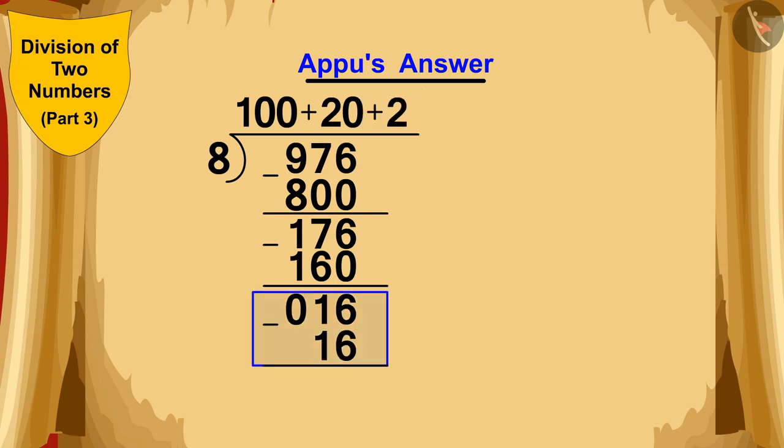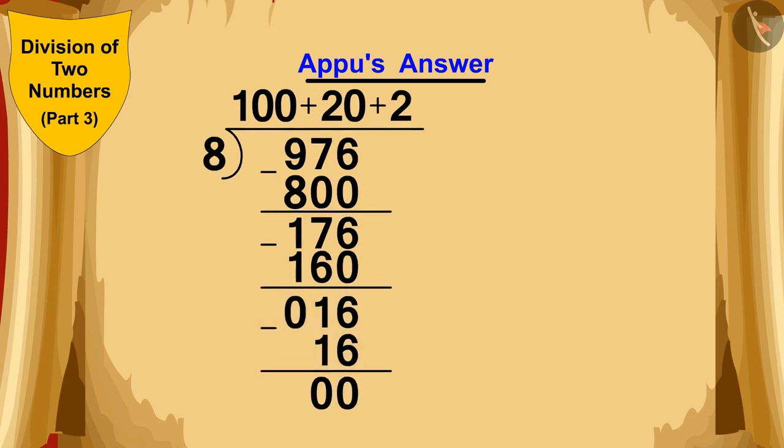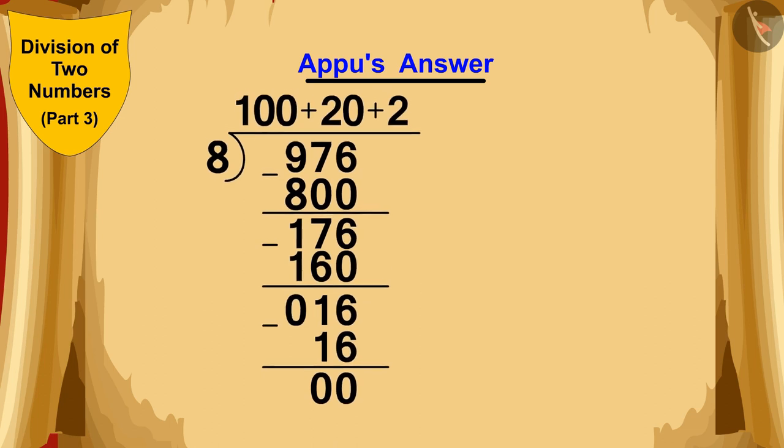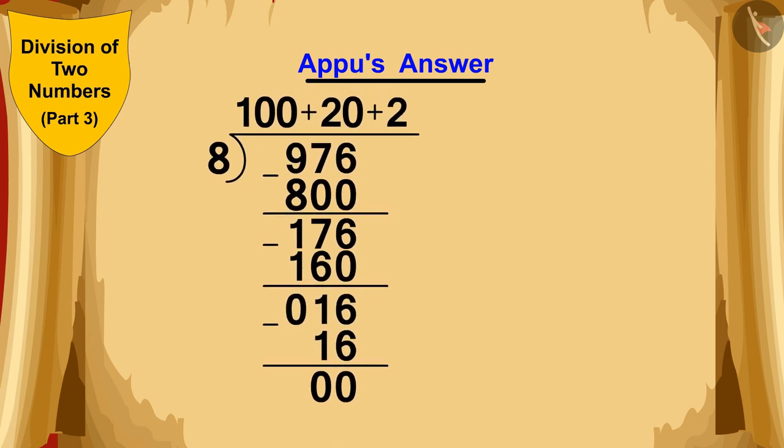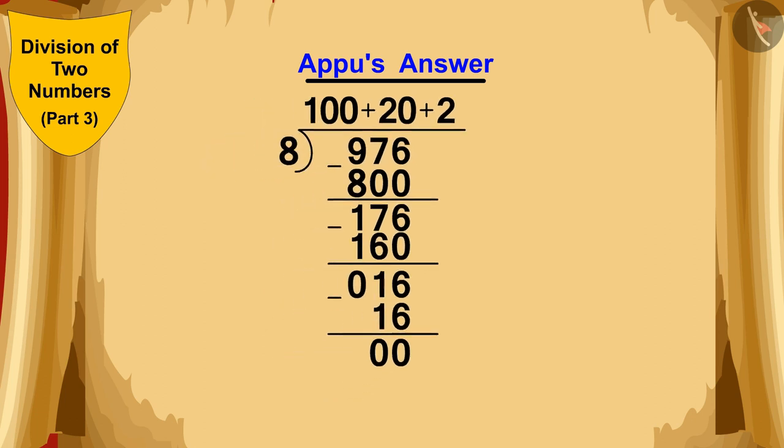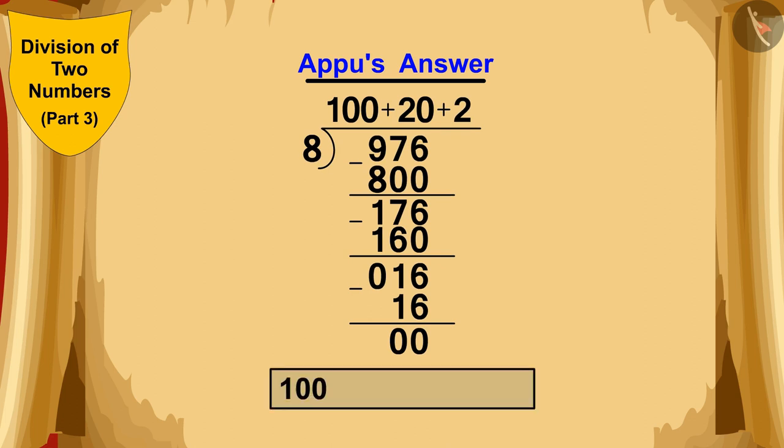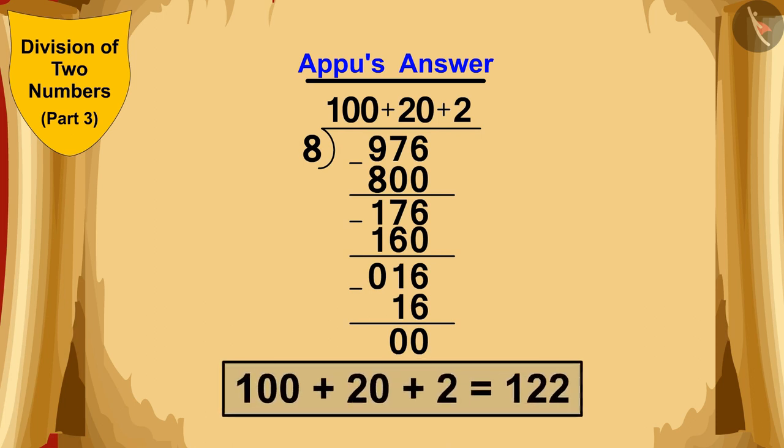And he deducted 16 from 16 and wrote 0 at the bottom. In this way, according to Appu's division process, the 976 chairs can be equally divided into rows of 8 chairs each by adding 100 plus 20 plus 2. That is 122 rows.